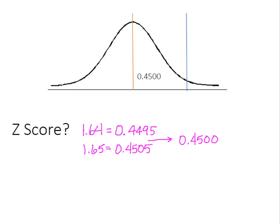We looked at our z-score table and we saw that with the z-score of 1.64, I had 0.4495. With the z-score of 1.65, I had 0.4505. We knew that they were the same distance away from our target of 0.4500.